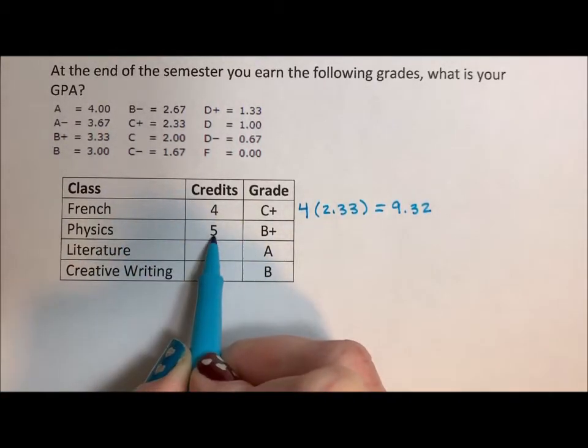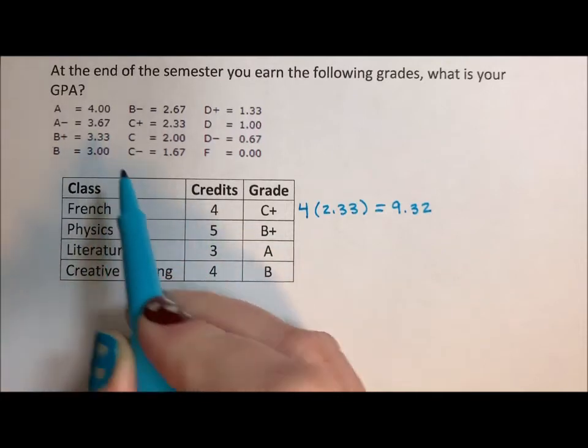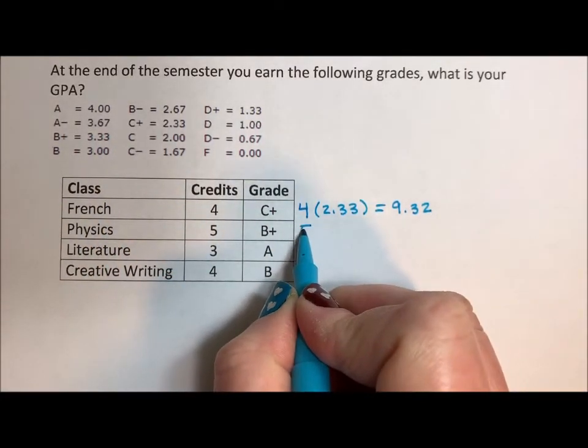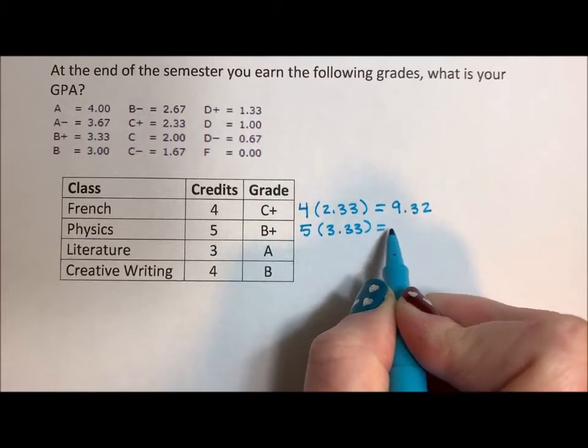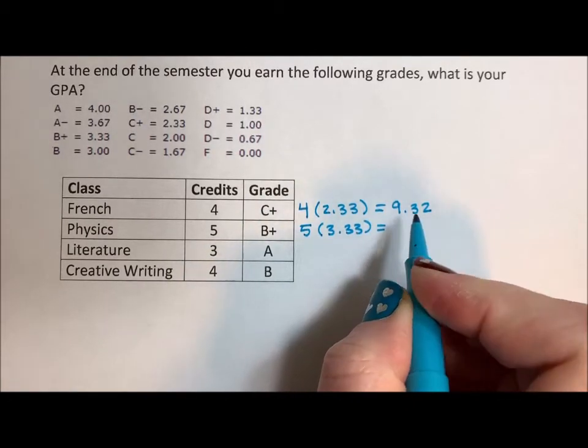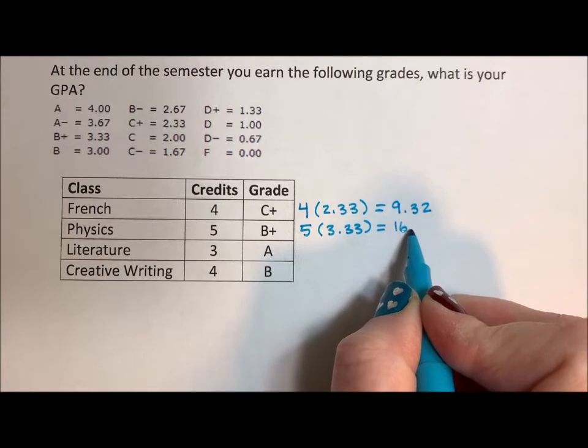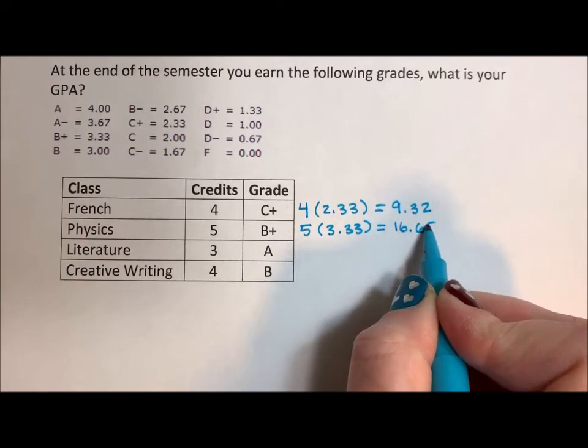Physics is a five-credit class. You have a B+, so that's 3.33. So five times 3.33 means at the end of the semester for physics, you've earned 16.65 points.